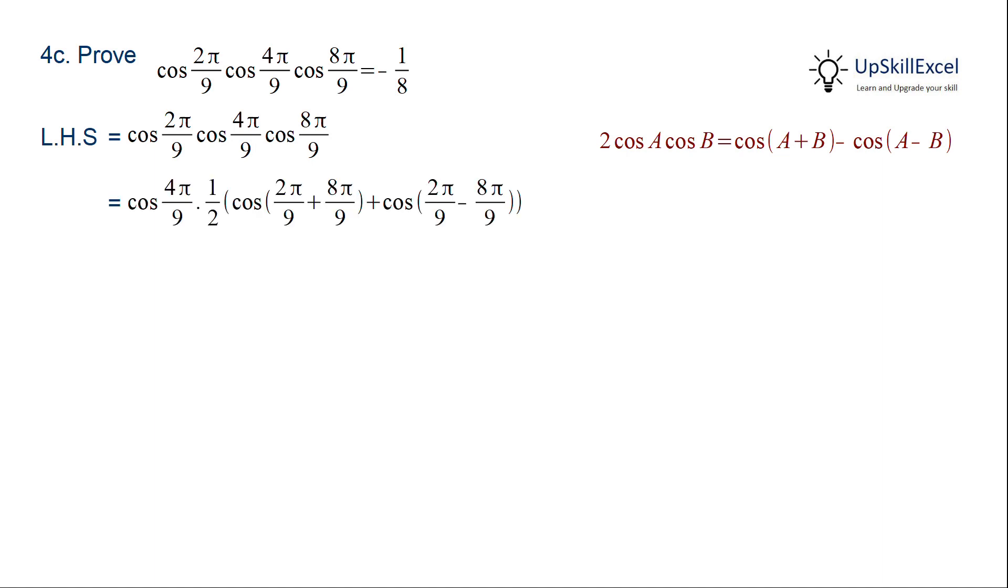Applying this formula and then further simplification of the sum and difference, we get 1/2 of cos 4π/9 multiplied by cos 10π/9 plus cos(-6π/9).